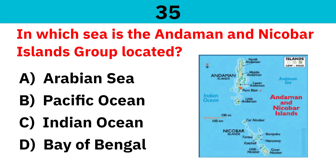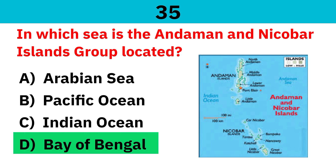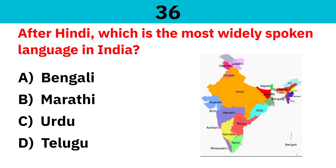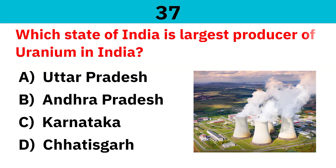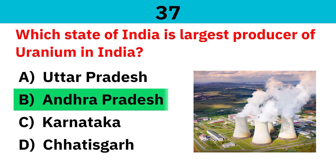In which sea is the Andaman and Nicobar Islands group located? Correct answer is Bay of Bengal. After Hindi, which is the most widely spoken language in India? Correct answer is Bengali. Which state of India is the largest producer of uranium? Correct answer is Andhra Pradesh.